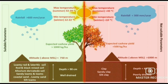In this picture, the left side shows the suitable parameters for the growth of cashew and the right side shows the non-suitable parameters. The suitable parameters are: altitude less than 750 meters, annual rainfall greater than 600 mm per year, and suitable soils such as loamy red, lateritic, and red and black mixed soil. The non-suitable parameters are: altitude greater than 1000 meters, rainfall less than 300 mm per year, and non-suitable soils such as clay and silt clay.